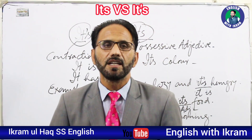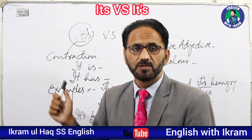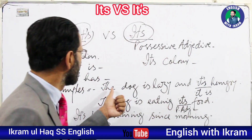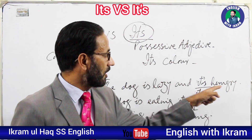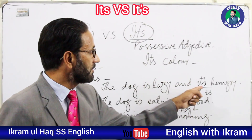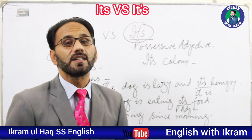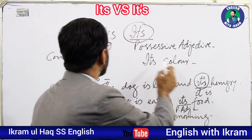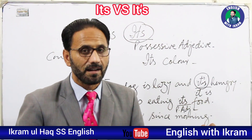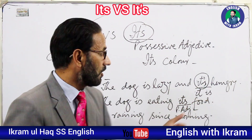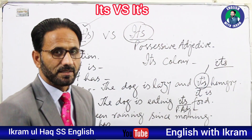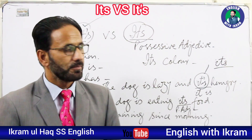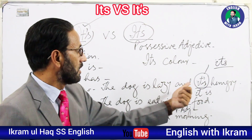Now let's take some examples. For the sentence 'The dog is lazy and it's hungry,' we pronounce the word the same but we have to write it with an apostrophe — 'it's' — because here it means 'it is.' The dog is lazy and it is hungry. We have to use this contracted form. We can't write it without the apostrophe here, because this is 'it is hungry.'